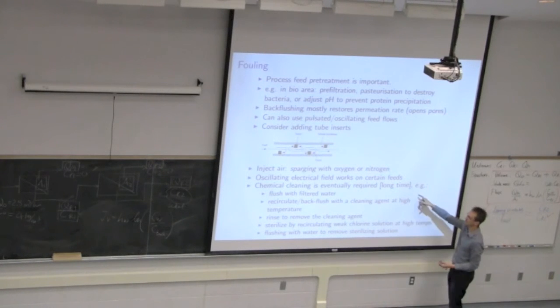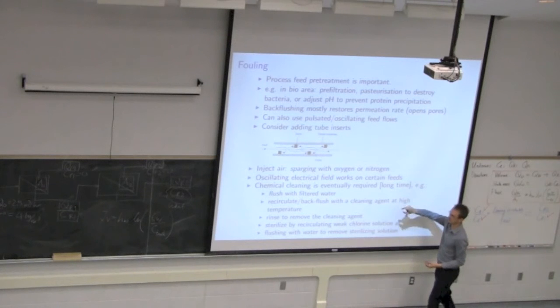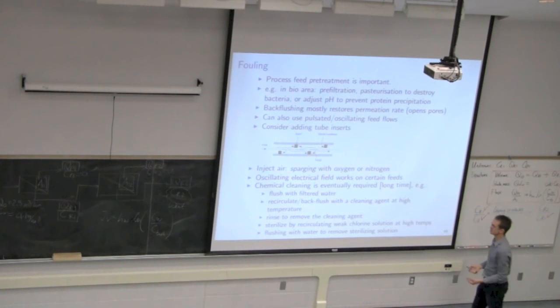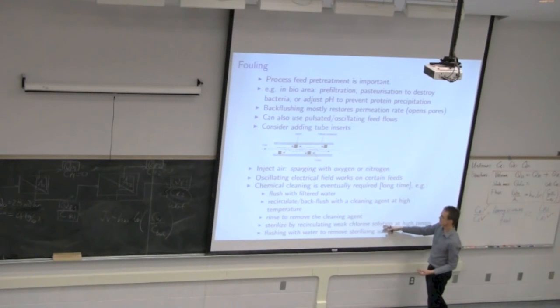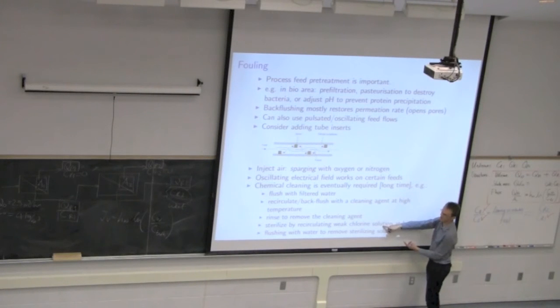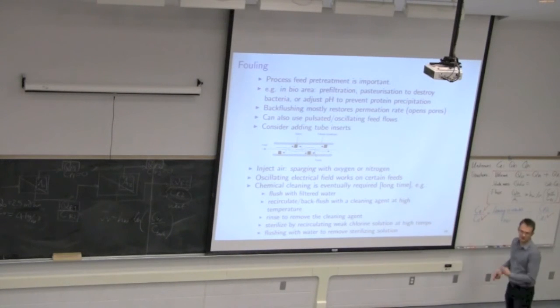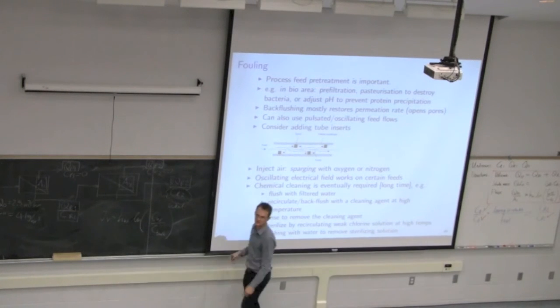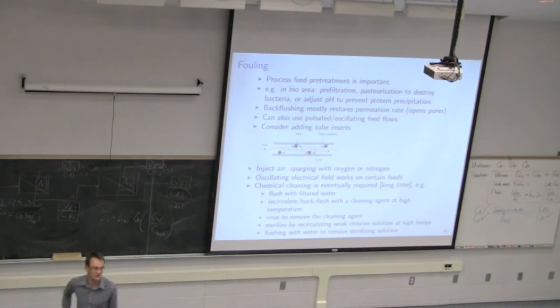But the reality is that at some point you will get buildup at the wall and you have to resort to a full chemical clean. And that's what we do over here. So we flush with water, you recirculate with chlorine or a cleaning agent of some sort. You rinse that agent off, you may sterilize here with chlorine again. So it's a lengthy downtime. But then once you've done all of this, you can effectively get back close to original fluxes when you bought it.